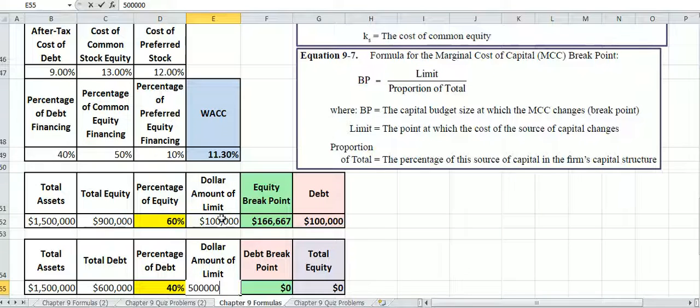Or debt, I mean. I keep saying that backwards. This is debt, $500,000.